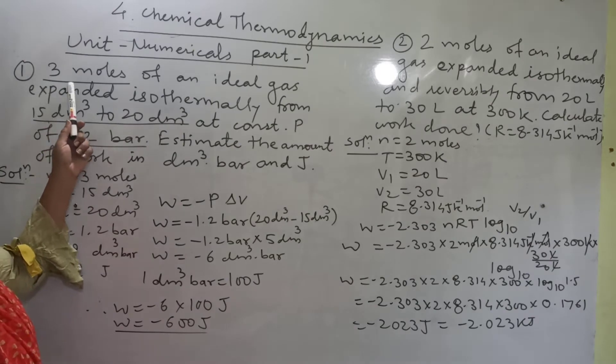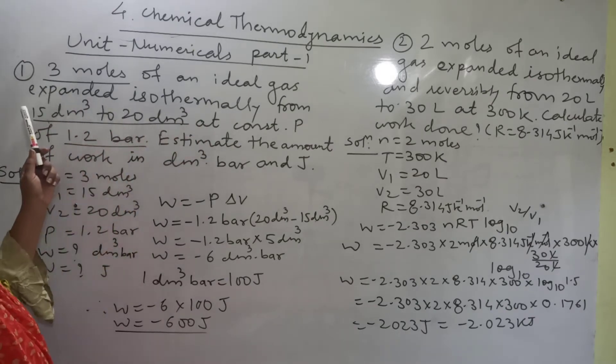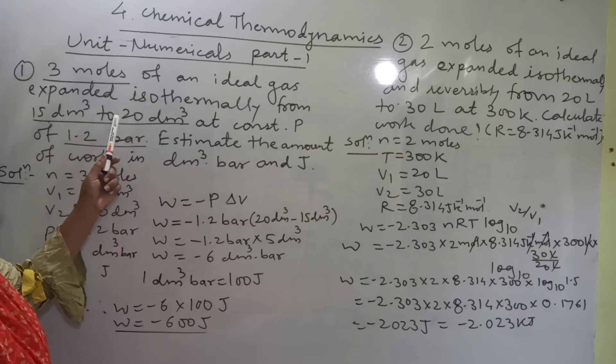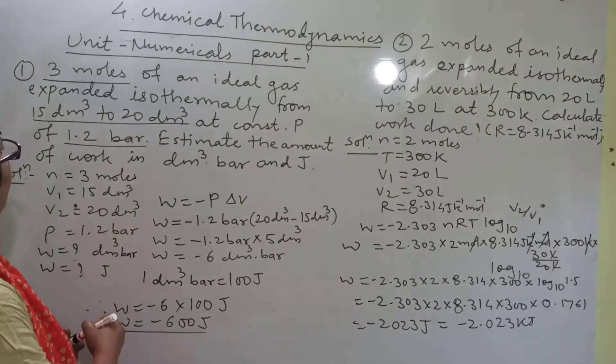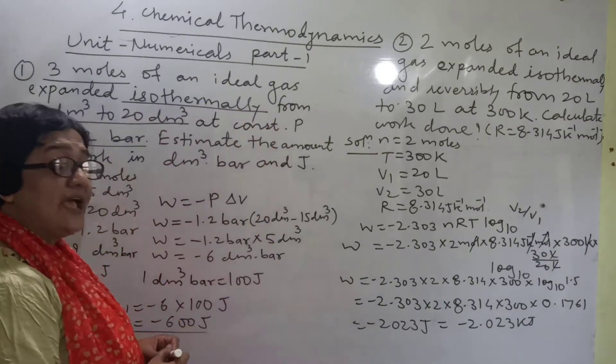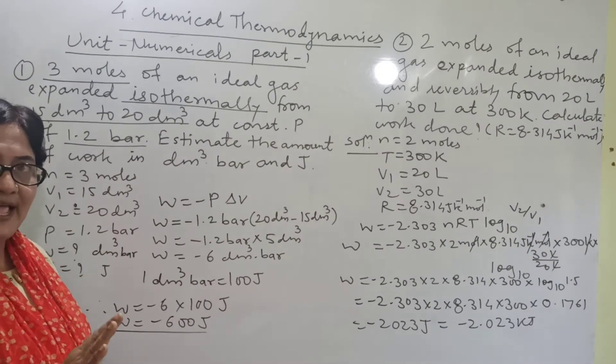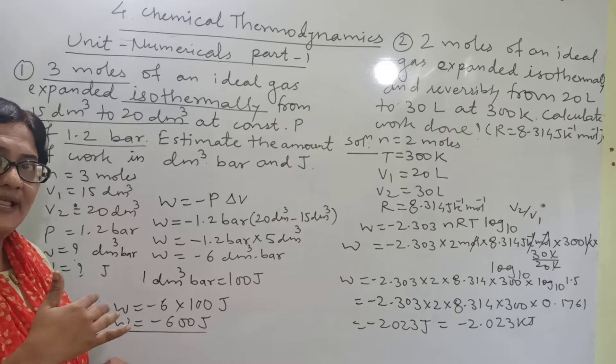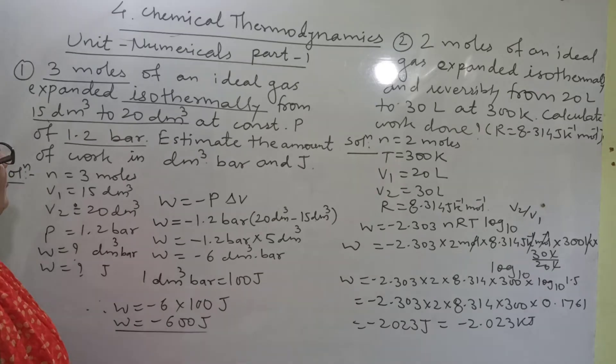The first problem: 3 moles of an ideal gas expanded isothermally from 15 cubic decimeter to 20 cubic decimeter. Always read the problem carefully. Here the word is given expanded isothermally. Only isothermally word is given, not reversible and isothermal. Because reversible isothermal is the maximum work, and only isothermal means it is not the maximum work.